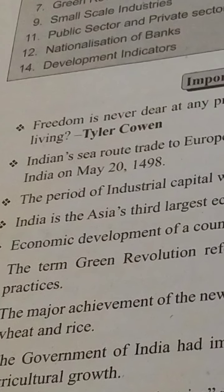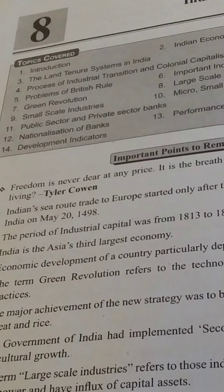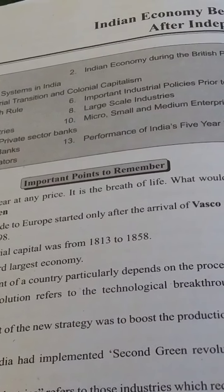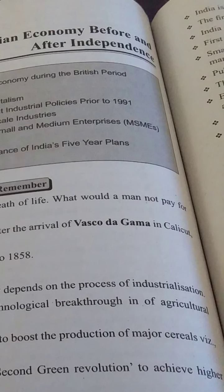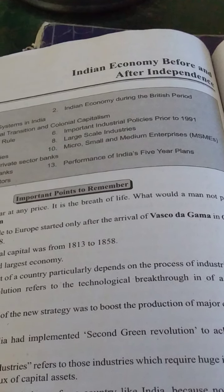The period of industrial capital was from 1813 to 1858. India is the third largest economy — first is China, second is Japan, and third largest economy is India. Economic development of a country particularly depends on the process of industrialization — one country would have economic development through industrialization.